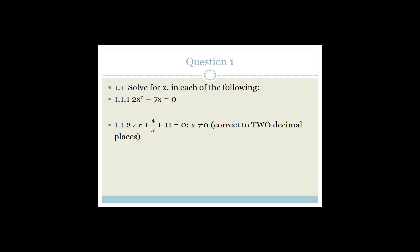A typical error students make with this question is that they say: 2x squared equals 7x, cancel the x's, and you're left with 2x equals 7, therefore x equals 7 over 2. That's correct as far as it goes, but you've actually missed a whole answer. You need to realize there is a common factor of x, and by canceling you've lost one of the answers. That's why they put this type of question in almost every exam paper.